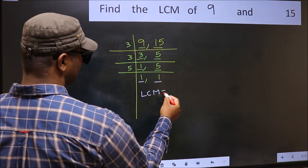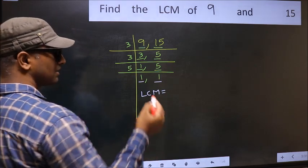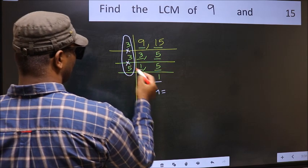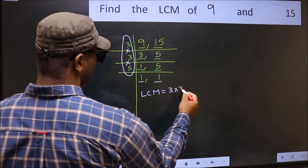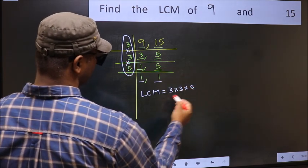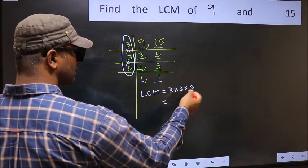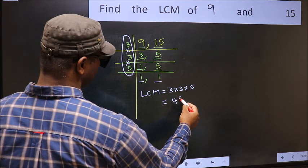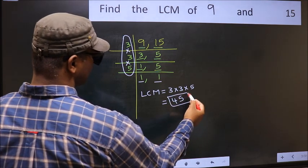So our LCM is, LCM is the product of these numbers. That is 3 into 3 into 5. When we multiply these numbers, we get 45 is our LCM.